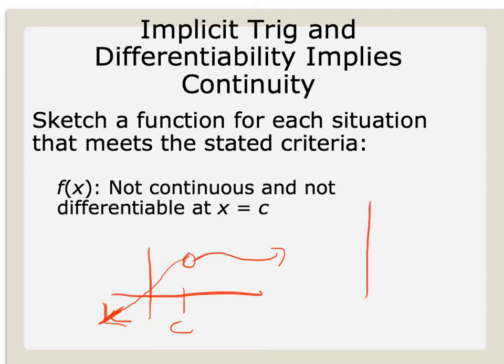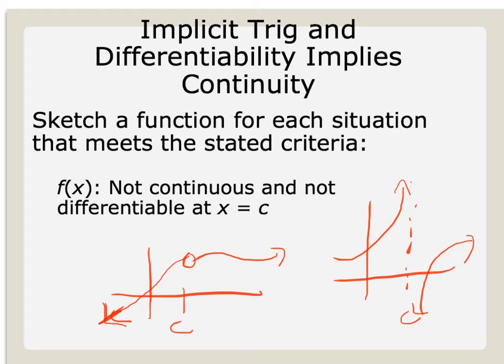Another example might be a function that has an asymptote at x equals c. It might look something like that — and that would also be a function that's not continuous and not differentiable.